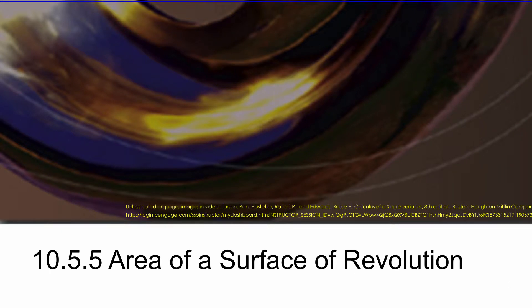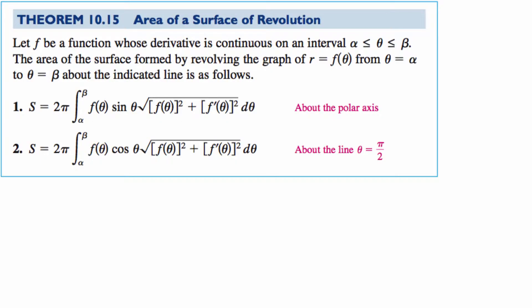Let's look at surface area of revolution in polar. Suppose I have a function that's well-behaved on an interval from alpha to beta, and I want the surface area when I rotate that curve about the polar axis.